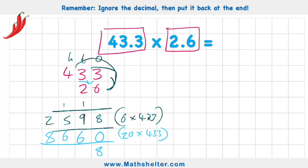I have 8. 9 plus 6 is 15. 5 plus 6 is 11, plus 1 is 12. And 2 plus 8 plus the 1 is 11. So my answer is 11,258.